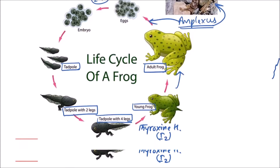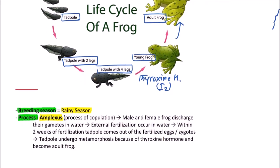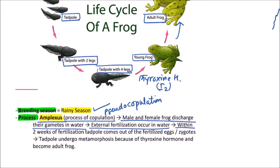The breeding season is the rainy season, and the process is amplexus — a process of pseudocopulation, since copulatory organs are absent. Male and female frogs discharge their gametes in water and external fertilization occurs. Within two weeks of fertilization, tadpoles emerge from the fertilized eggs or zygotes, and tadpoles undergo metamorphosis due to thyroxine hormone.